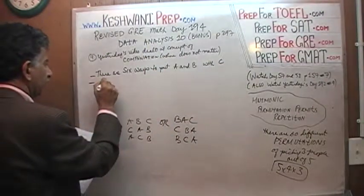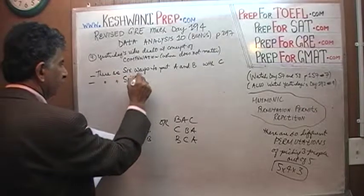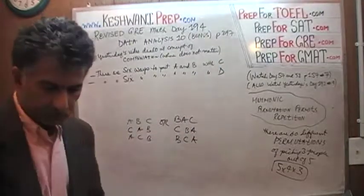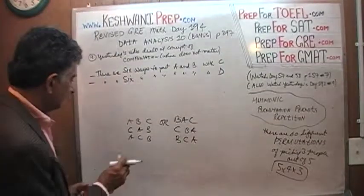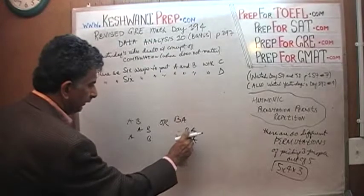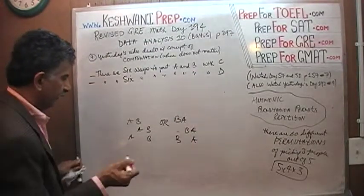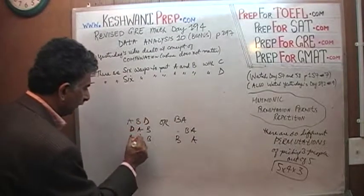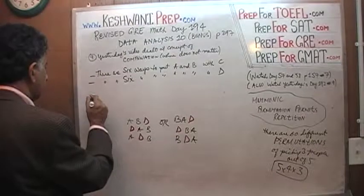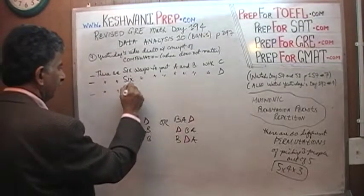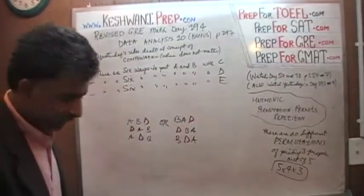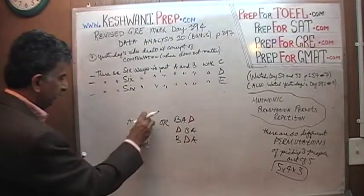Similarly, there are going to be six different ways of putting A and B with D — wherever we see C, we replace it with D. That's all. There are six different ways of putting A and B together with D. And finally, there are six different ways of putting A and B with E — we just replace D with E.